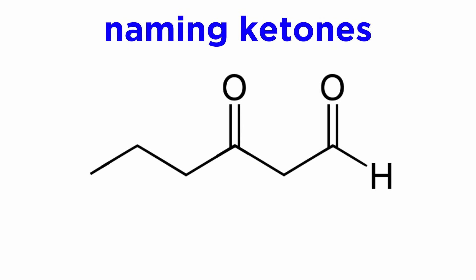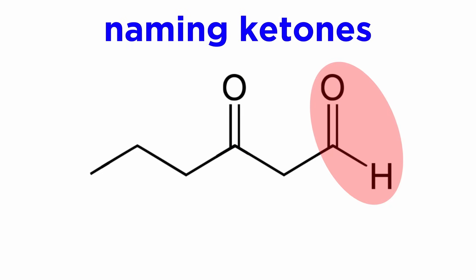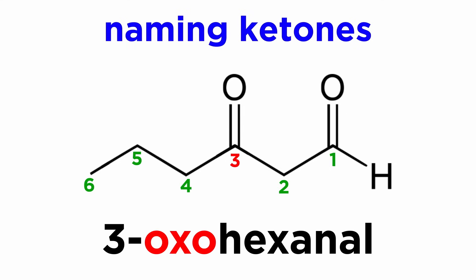Sometimes a double-bonded oxygen can be considered a substituent when there is a higher priority functional group present, like this example with both a ketone and an aldehyde. Here, we refer to the ketone oxygen as oxo, so we get 3-oxohexanal.